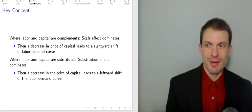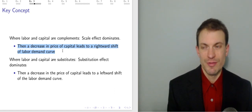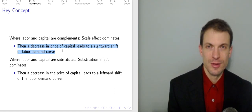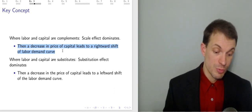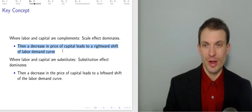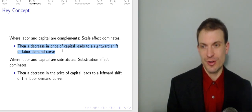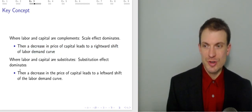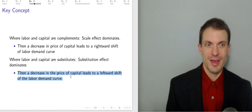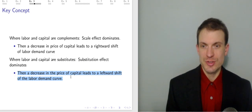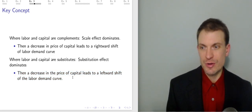Where labor and capital are complements, the scale effect dominates. Where labor and capital are substitutes, the substitution effect dominates. So if the scale effect dominates, a decrease in the price of capital gives us a rightward shift — an increase in labor demand. Lower price of capital means you expand, use more capital, and also expand production, therefore needing more workers. If the substitution effect dominates, a decrease in the price of capital means a leftward shift to labor demand — you use machines instead of workers, so you hire fewer workers.